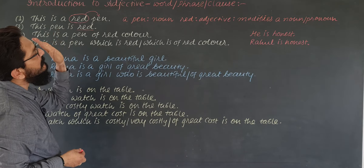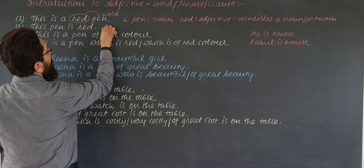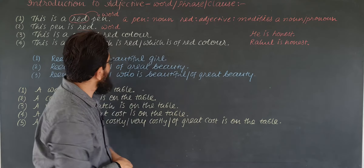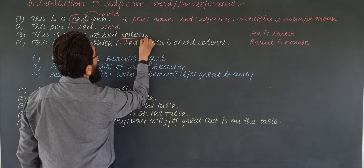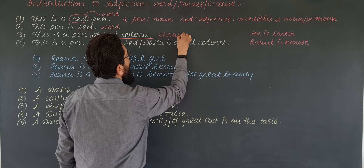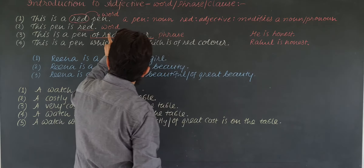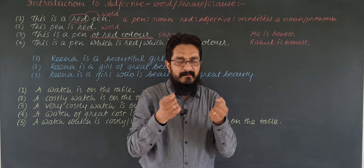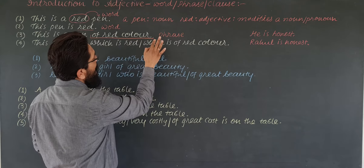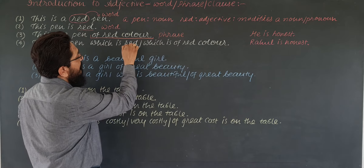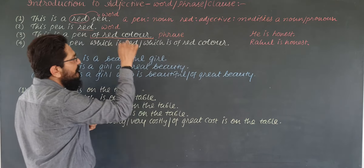Red is a single word only — it is a word. Now what is a phrase? 'This is a pen of red color.' The phrase 'of red color' is a phrase — a group of words. But it has no subject or verb combination. This phrase adds something to the meaning of a noun, that is why it is an adjective phrase.